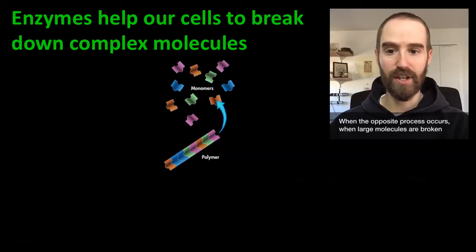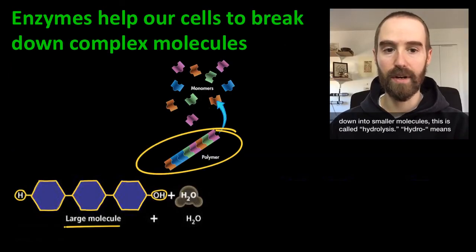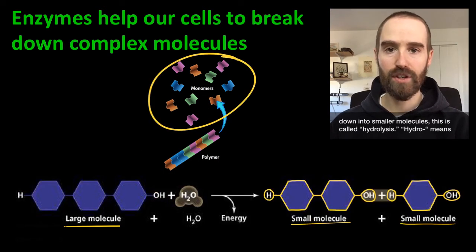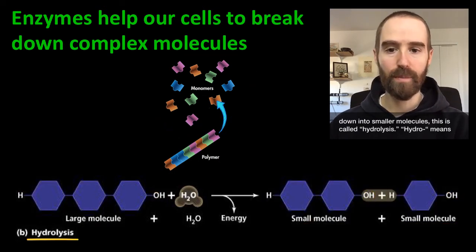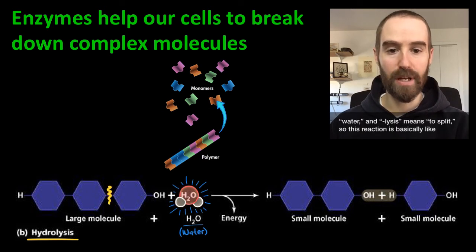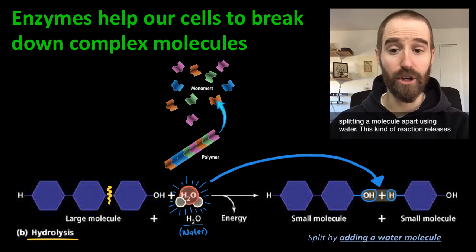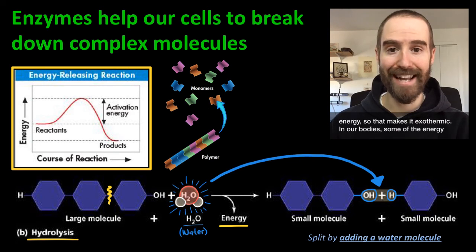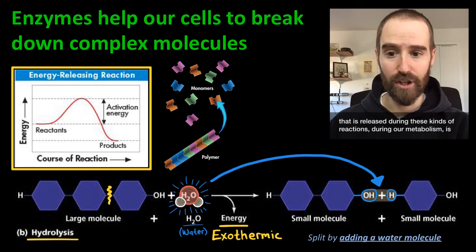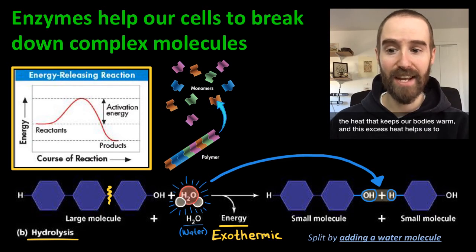When the opposite process occurs — when large molecules are broken down into smaller molecules — this is called hydrolysis. Hydro means water and lysis means to split, so this reaction is basically like splitting a molecule apart using water. This kind of reaction releases energy, so that makes it exothermic. In our bodies, some of the energy that is released during these kinds of reactions during our metabolism is the heat that keeps our bodies warm, and this excess heat helps us to maintain homeostasis.